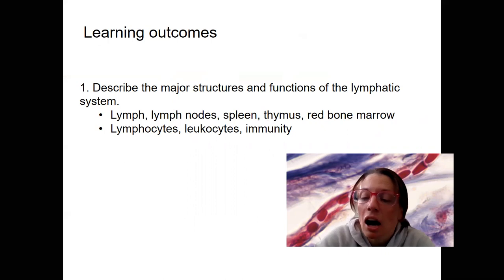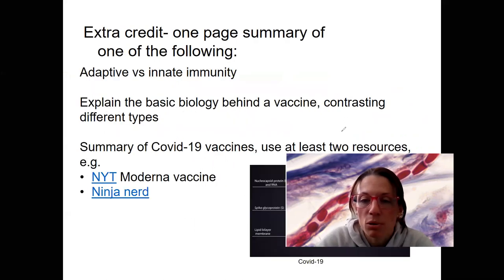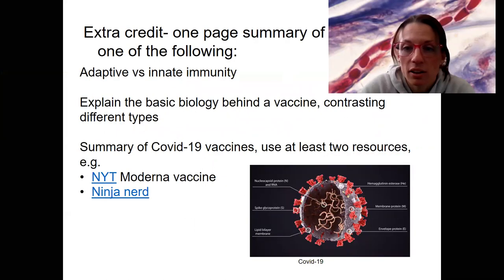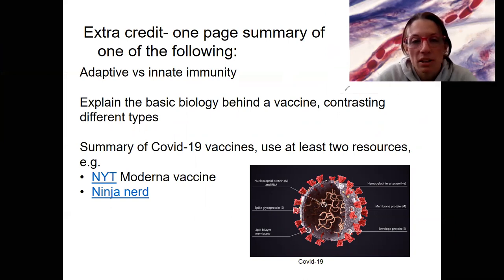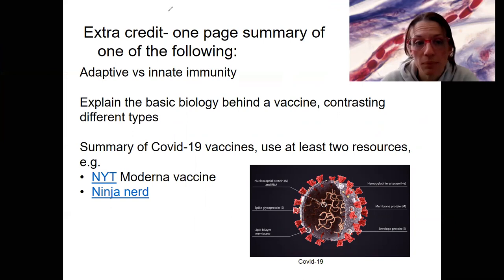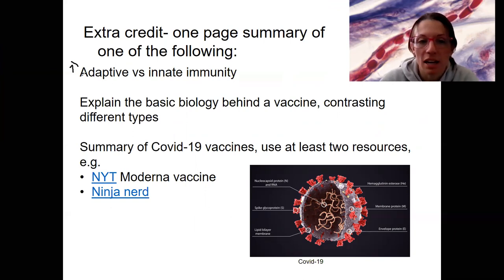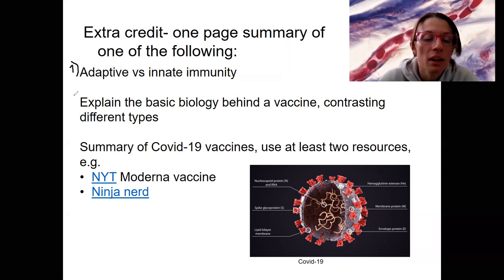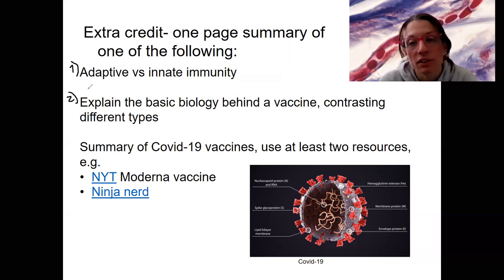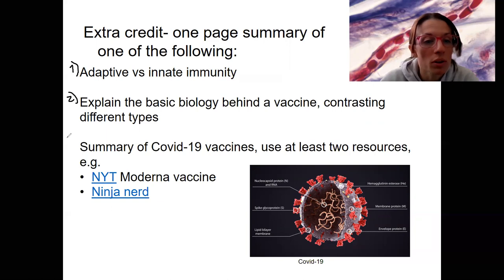Lastly, I've got an option for an extra credit assignment. This is posted on the Google doc that I have summarizing this as well. There are three separate options, all related to immunity — a one-page summary of one of these: a summary of adaptive versus innate immunity, a summary of the basic biology behind vaccines contrasting different types, or a summary of the COVID-19 vaccines.